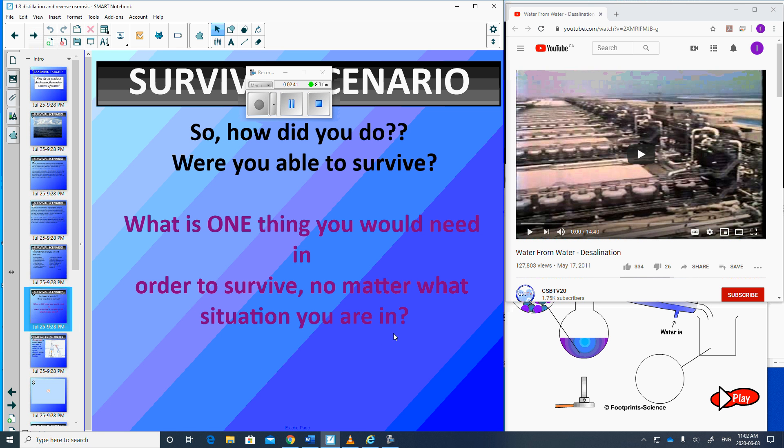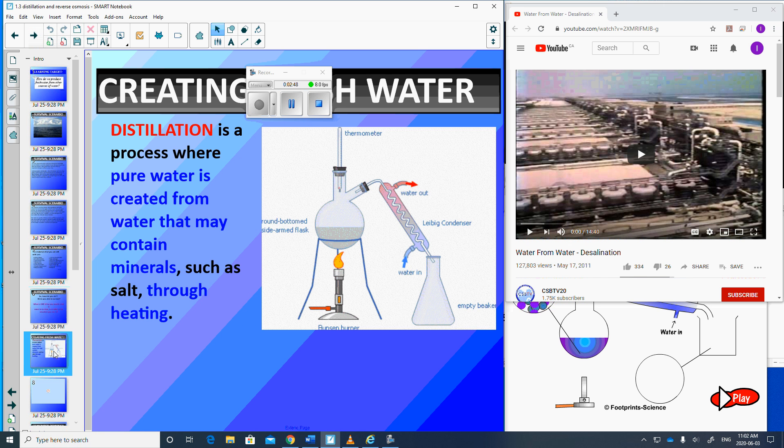Spoiler alert, the one thing you need in order to survive no matter what situation you're in. Yes, water would be the most important. So how do we create water if all we've got is salt water? Or, one of my favourite things to do in the classroom is actually to take some sewage, poo, just straight up sewage and distill it.